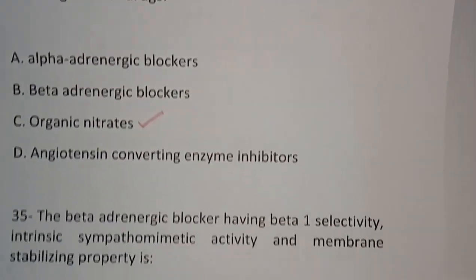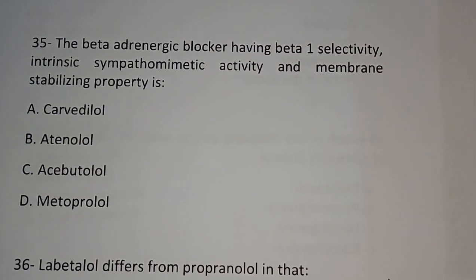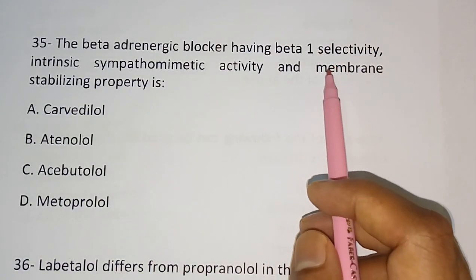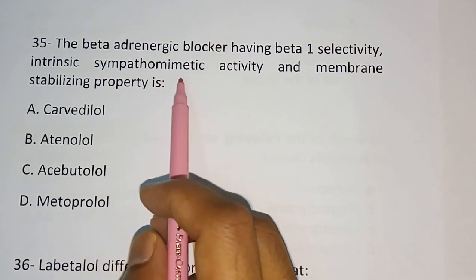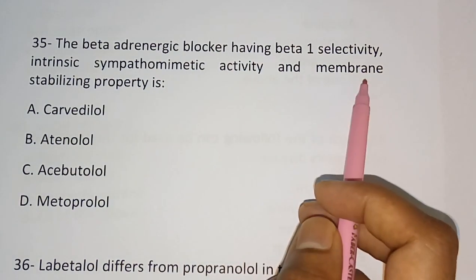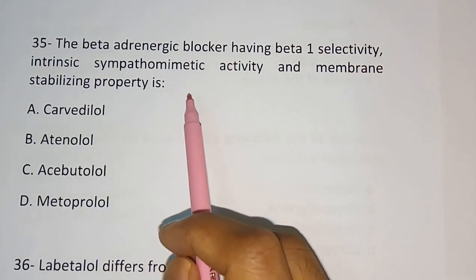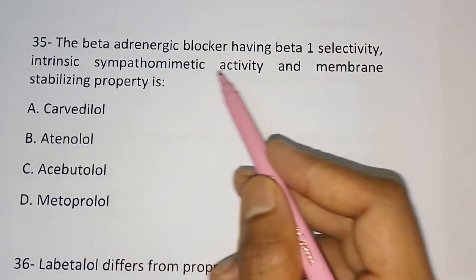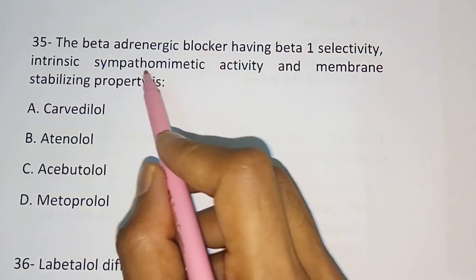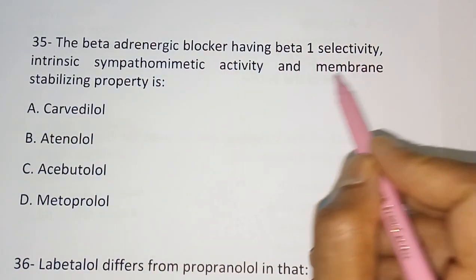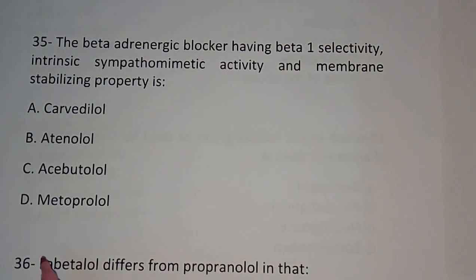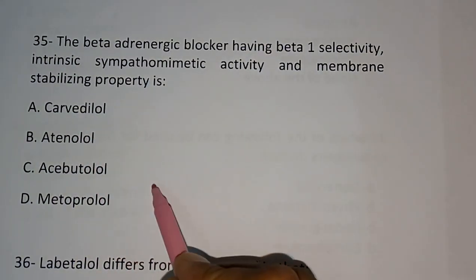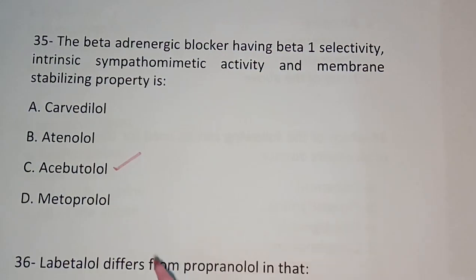Question number 35: The beta adrenergic blocker having beta-1 selectivity, intrinsic sympathomimetic activity, and membrane stabilizing property — options are: Carvedilol, Atenolol, Acebutolol, Metoprolol. The correct answer is: Acebutolol.